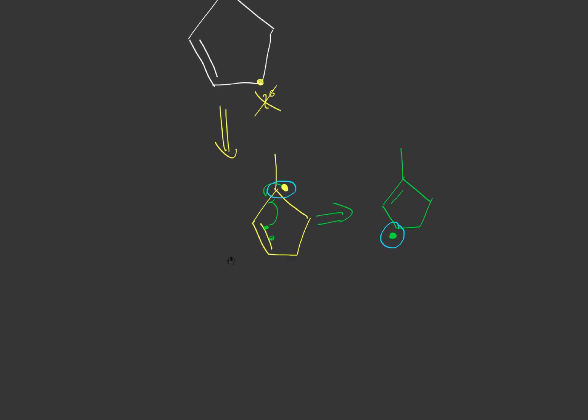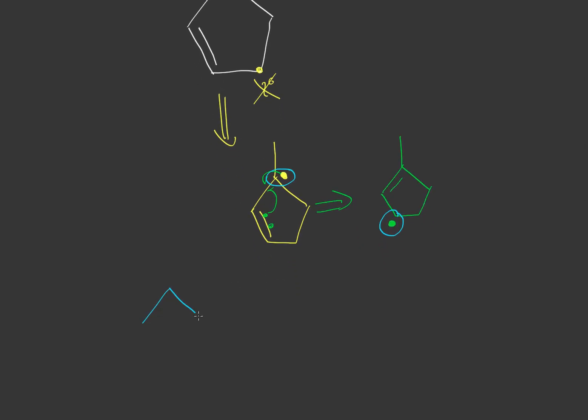So the two different products that we can actually get are a cyclopentane with a bromine over here and a cyclopentane methyl and a bromine over here. And let's not forget where the double bonds are. The double bonds are right there and right there.